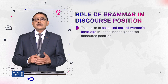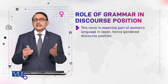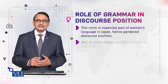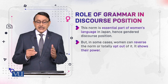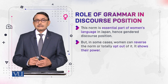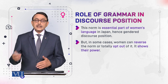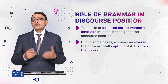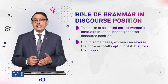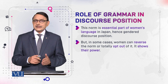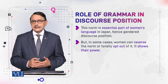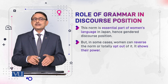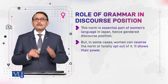This norm is an essential part of women's language in Japan, hence it is a gender discourse position. But in some cases, women can reverse the norm or step out of it entirely — and that shows their power. If women don't follow that norm, when they talk with the addressee they enhance themselves and lower the status of the addressee, and in that case they show power.